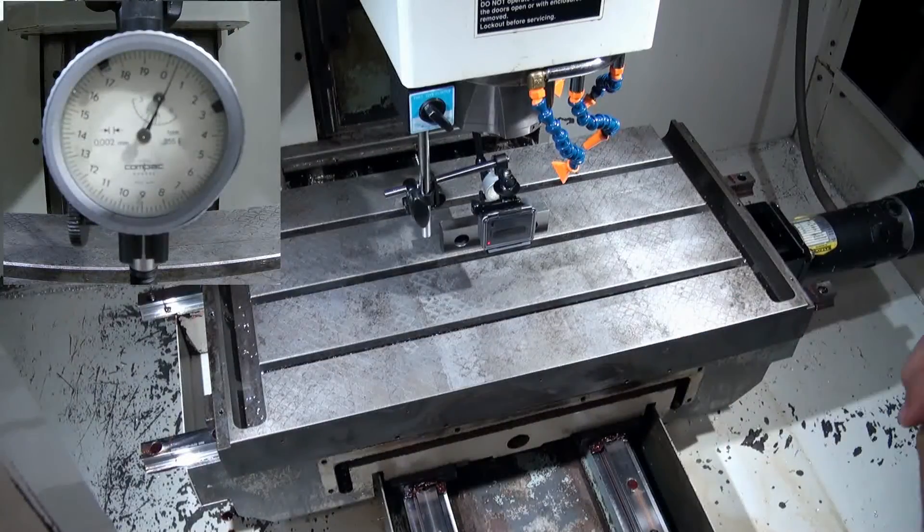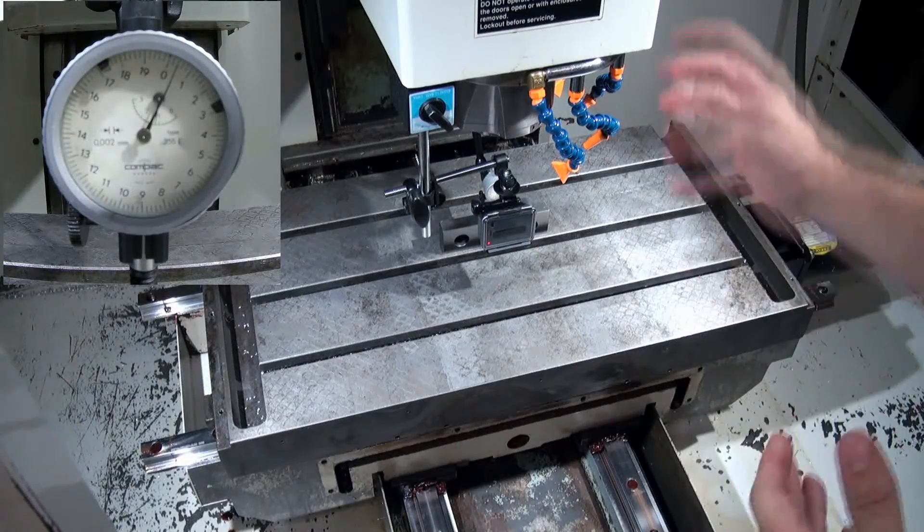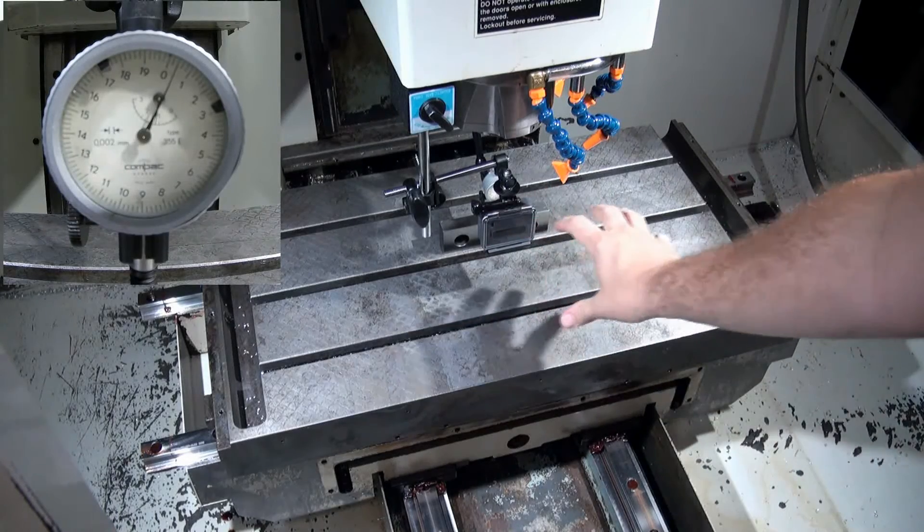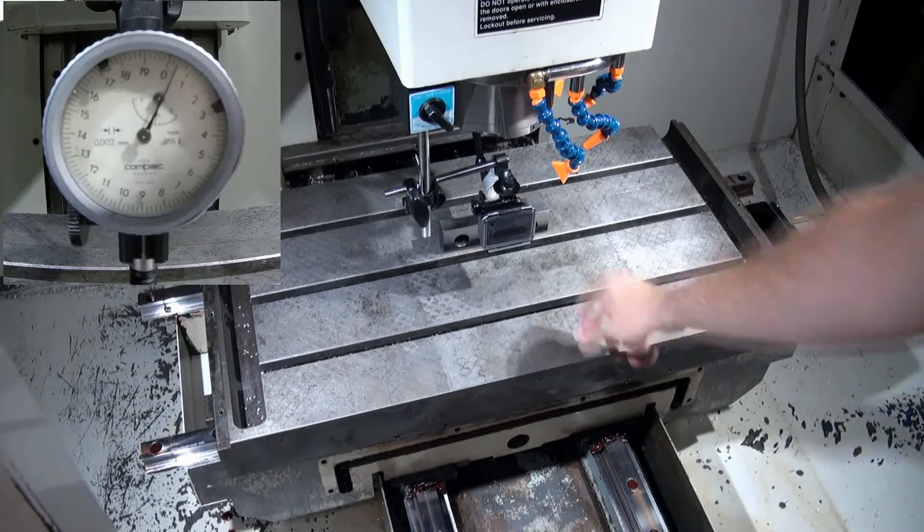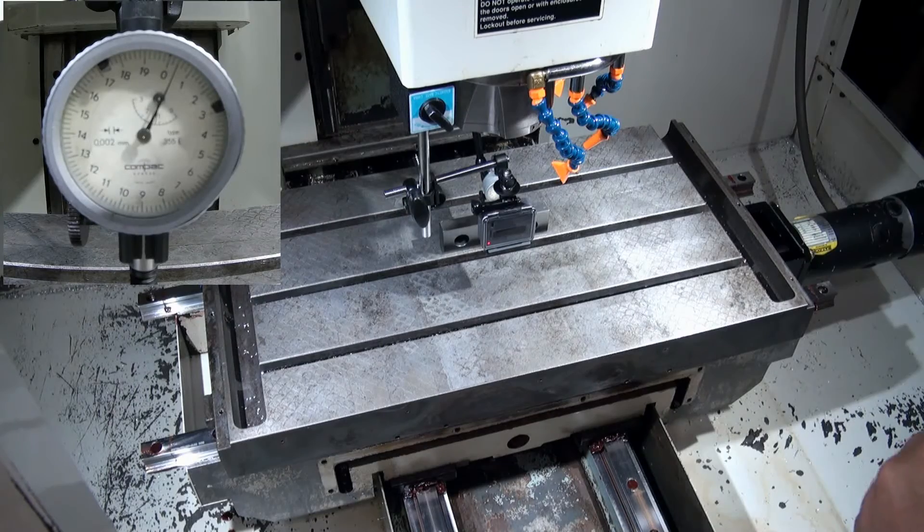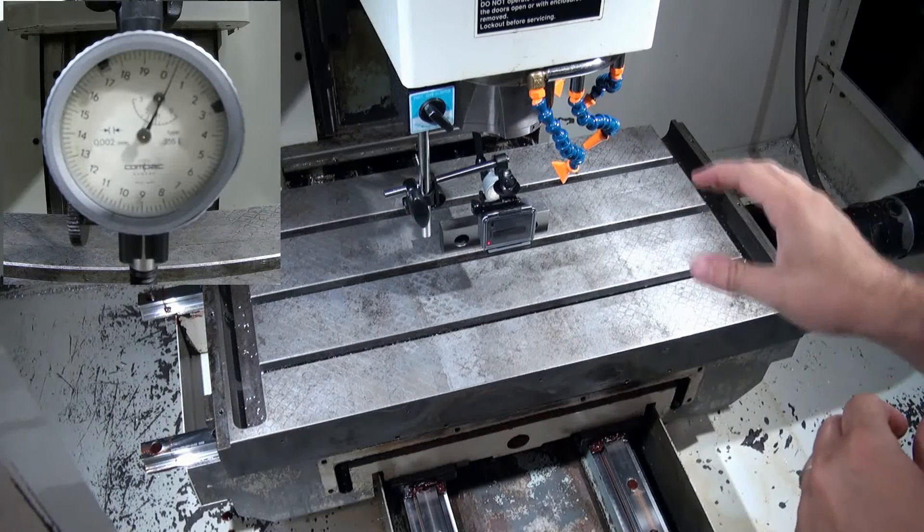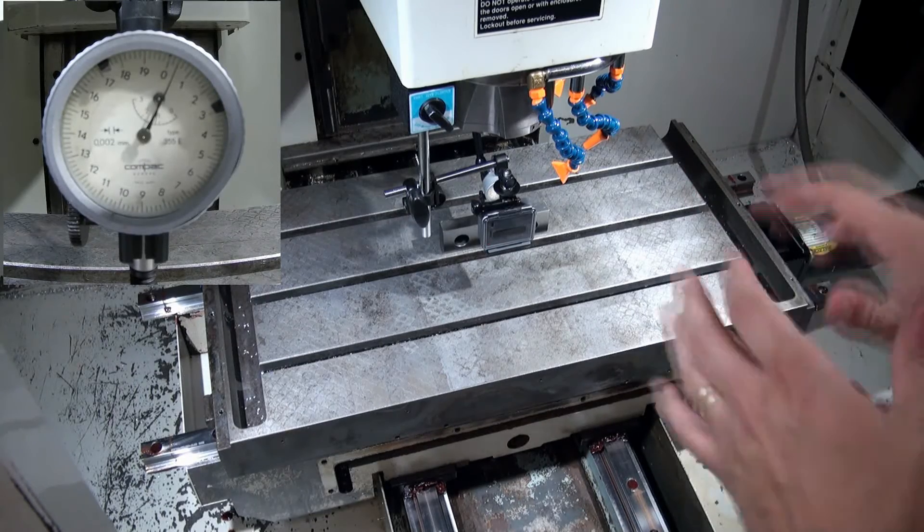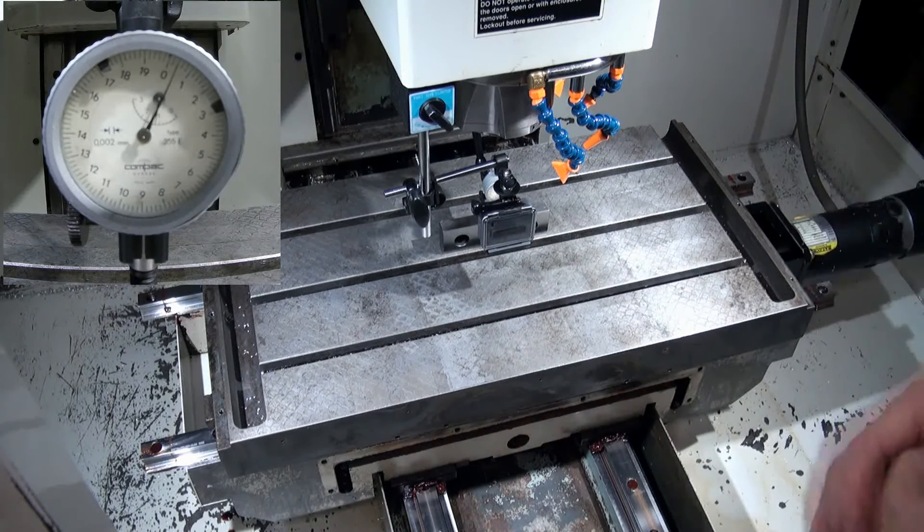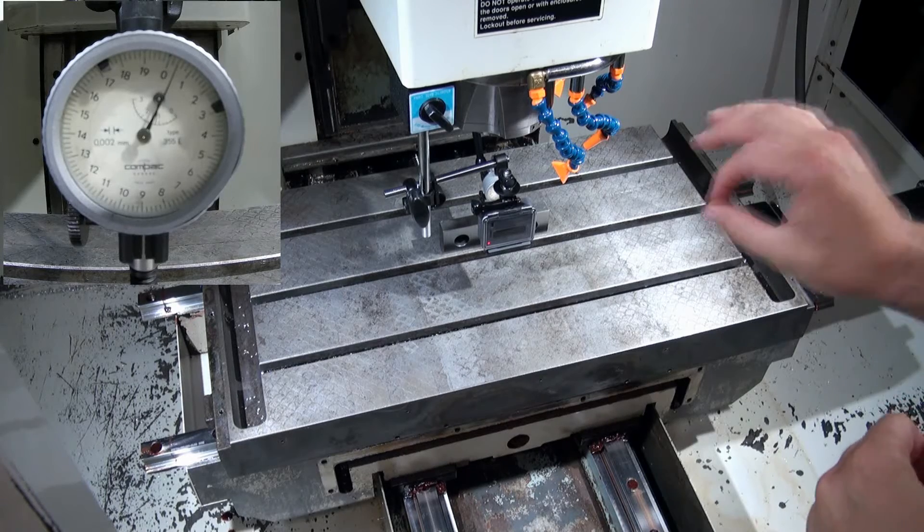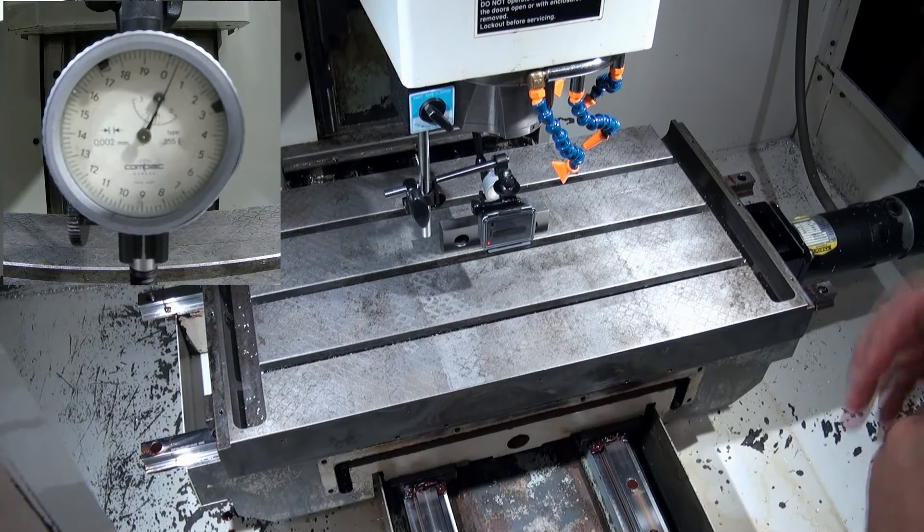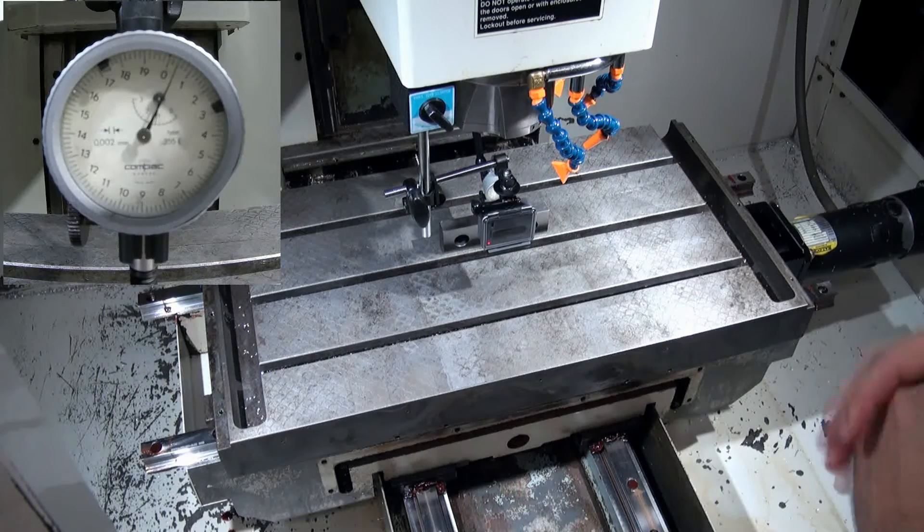We have our indicator set up. It's just hanging off of the spindle using an indicator holder. Got my GoPro set up so you can see the indicator face. Now while we're running this test you're going to see the indicator move a lot. It's not moving a lot because this machine has a lot of error. It's moving a lot because it's an extremely high resolution indicator.